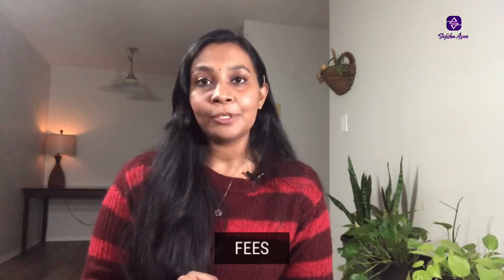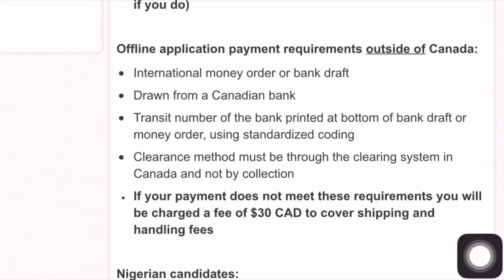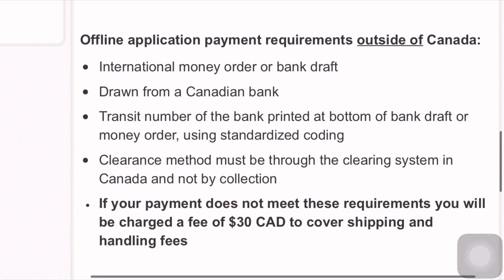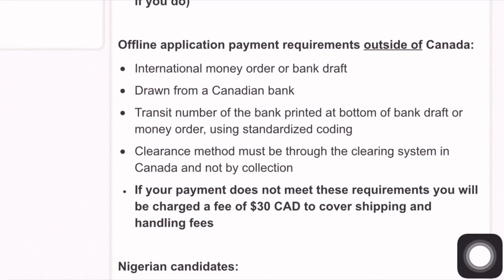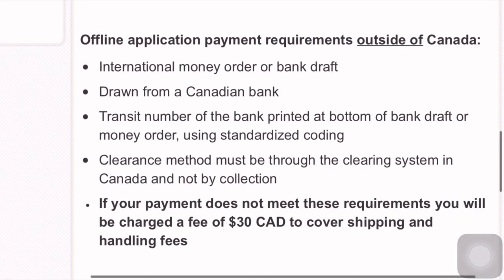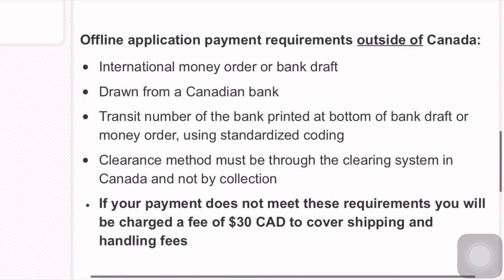The current fee for PEBC document evaluation is Canadian dollar 675. You can pay the fees with a credit card — Visa or Mastercard. The fees are non-refundable once your document evaluation is completed. You can also use offline payment options if you have money in your PEBC account. If paying offline outside Canada, only an international money order or bank draft drawn from a Canadian bank is accepted, and the transit number of the bank must be printed at the bottom of the draft or money order.